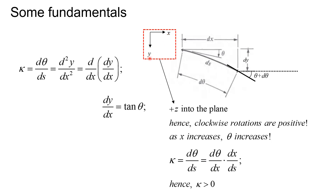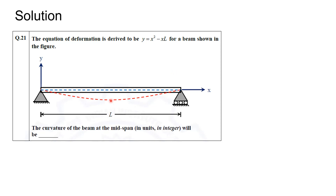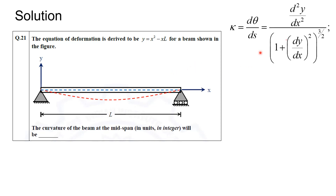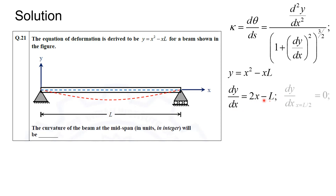Returning to the problem, we need the curvature at mid-span. Given y = x² - xl, we differentiate to get dy/dx = 2x - l. At mid-span, x = l/2, so dy/dx = 0, making the denominator term vanish. Differentiating again gives d²y/dx² = 2. Substituting into the curvature formula gives curvature = 2.